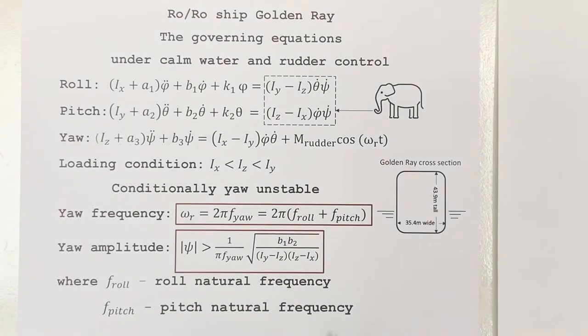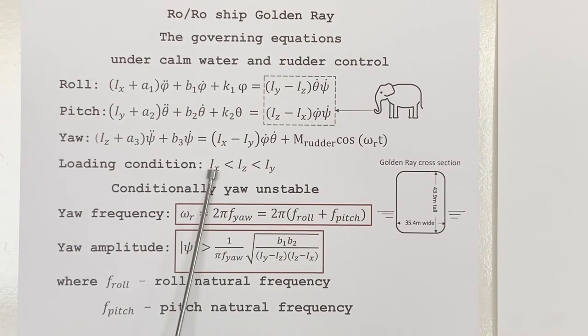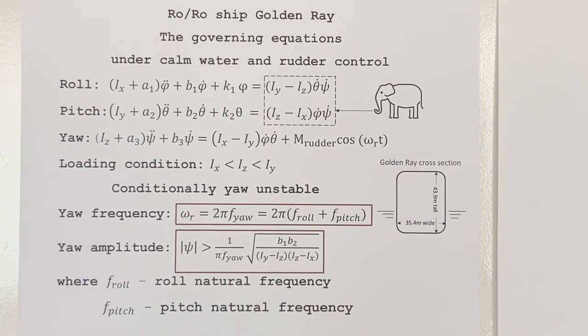Those conditions are summarized below. Golden Ray is assumed to be in a loading condition so that its yaw moment of inertia is intermediate, meaning that it is larger than roll moment of inertia, smaller than pitch moment of inertia. Because Golden Ray is tall and narrow. This is the cross-section of Golden Ray. Then this dynamical system will have a conditionally unstable yaw phenomenon.